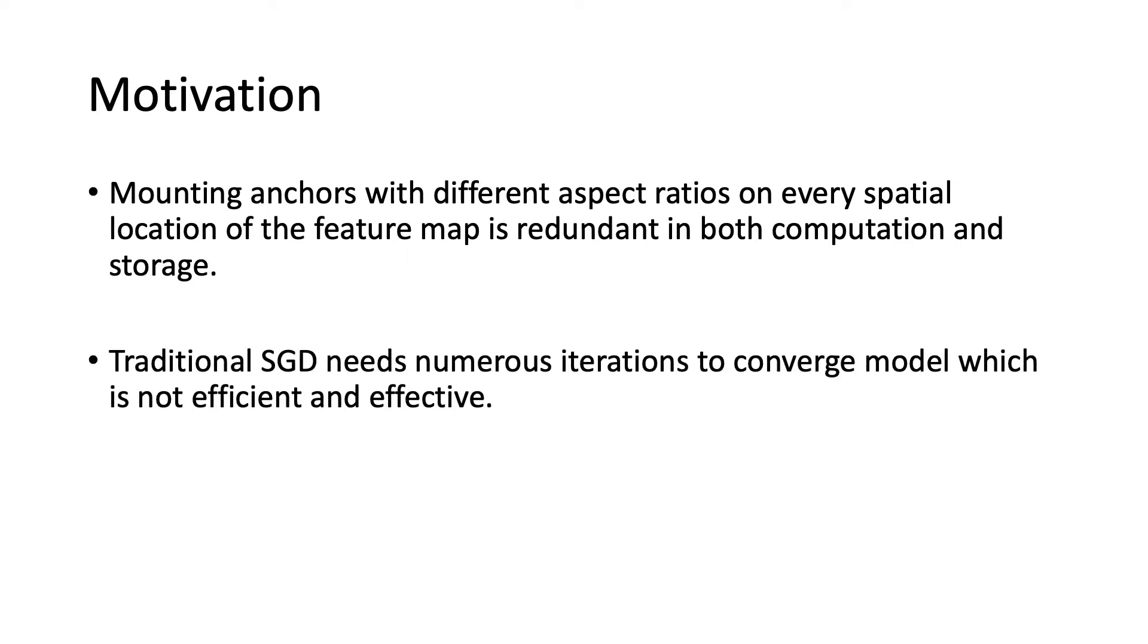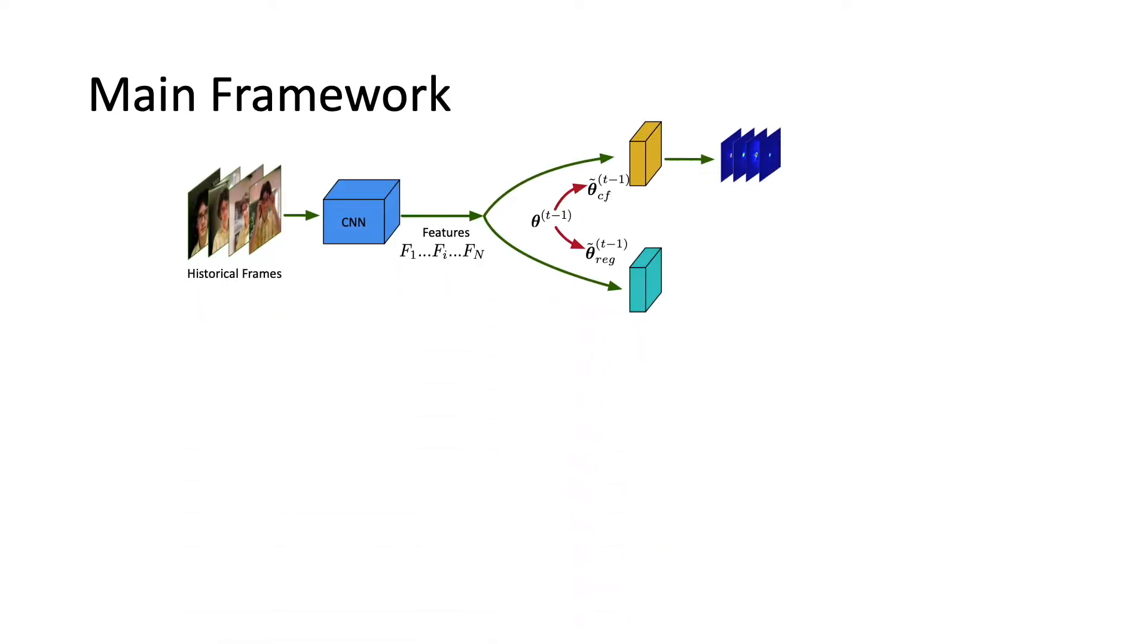The tracking model contains two branches where the response branch determines the presence of the target and the regression branch estimates the object box. Note we use a resizable anchor to adapt the shape variation of objects, which saves parameters and achieves faster speed.